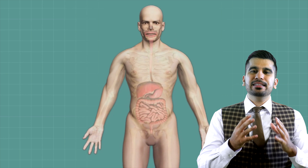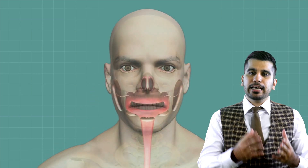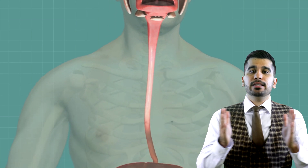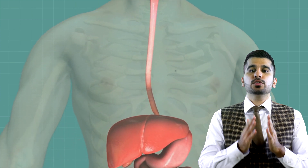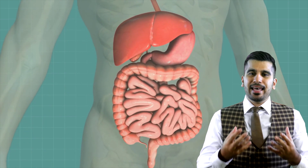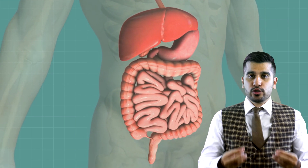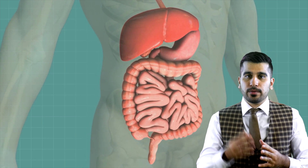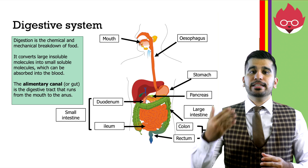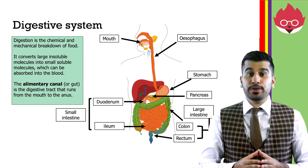Digestion is the chemical and mechanical breakdown of food. It converts large insoluble molecules into smaller soluble molecules, which can be absorbed into the blood. The alimentary canal, or the gut, is the digestive tract, which runs from the mouth to the anus. This diagram shows the different parts you'll be required to remember for your exams.